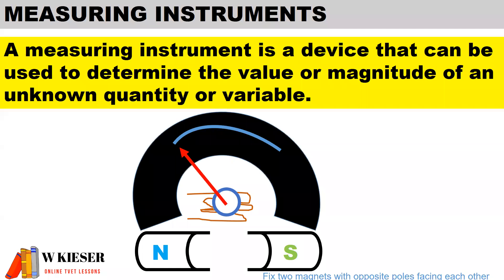In this illustration we have a moving coil instrument with two fixed permanent magnets which are a north pole and a south pole.